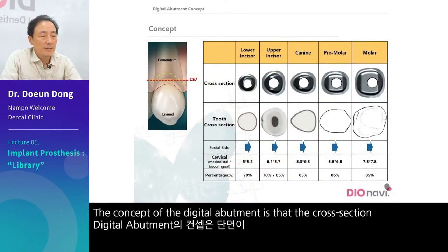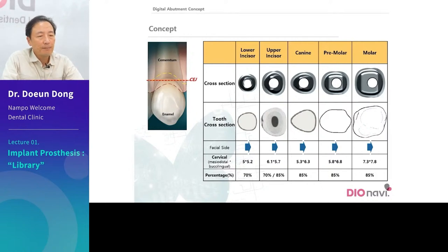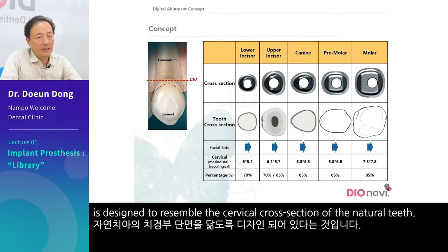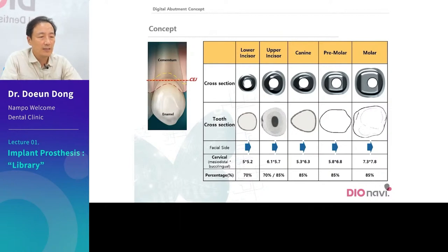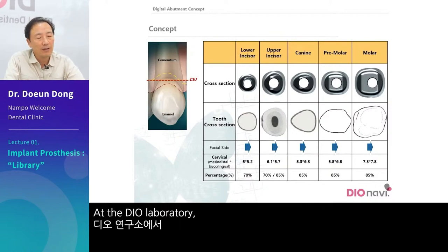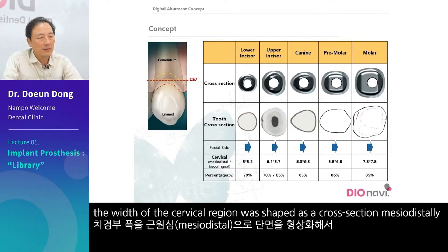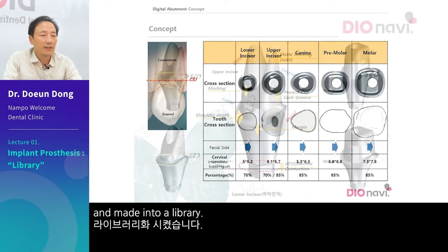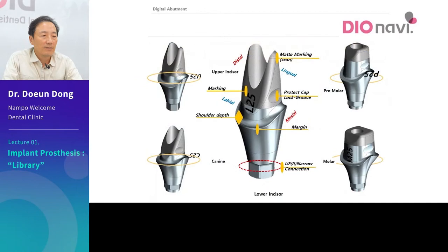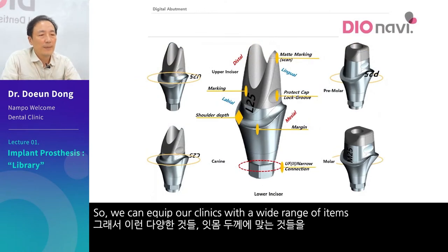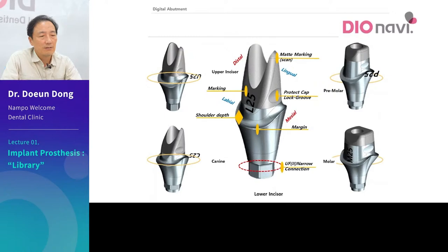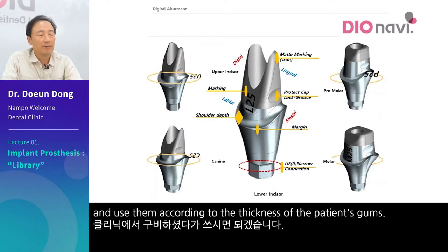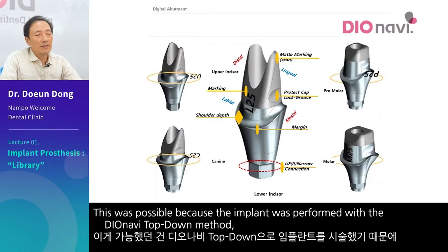The concept of digital abutment is that the cross-section is designed to resemble the cervical cross-section of natural teeth. At the DIO laboratory, the width of the cervical region was shaped as a cross-section mesiodistally and made into a library. We can equip our clinics with a wide range of items and use them according to the thickness of the patient's gums. This was possible because the implant was performed with the DIOnavi top-down method.